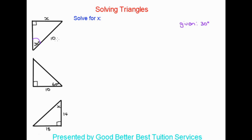What's also given to us is this 10 over here. We need to write down the name of this side, which is the hypotenuse, as it is opposite the right angle. So we also know we have the hypotenuse, and that's equal to 10.